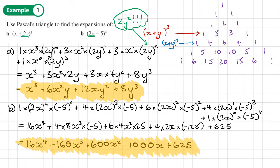So the final answer is 16x to the power 4 minus 160x cubed plus 600x squared minus 1000x plus 625. Our answer should always be given in its most simplified form.